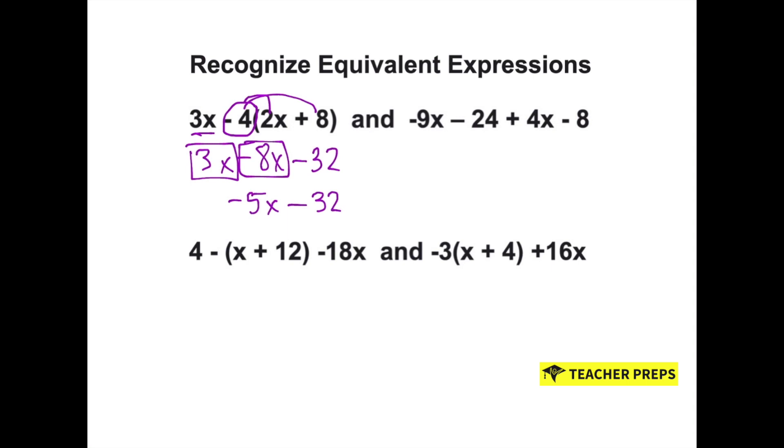Now let's work on the side on the right. Negative 9x and positive 4x makes a negative 5x. Then we can combine our constants. Negative 24 and negative 8 makes a negative 32. You can see the side on the left equals the side on the right, so they are equivalent expressions.